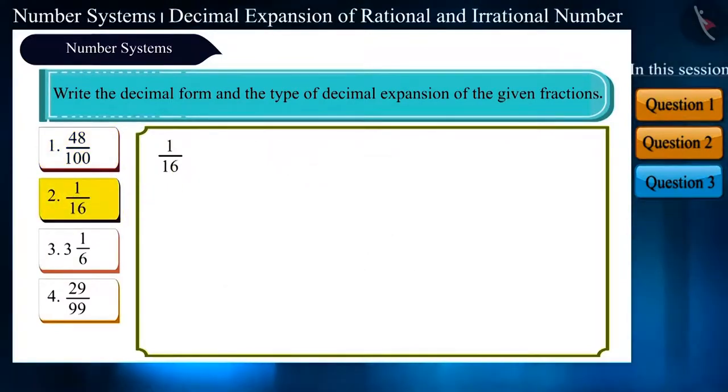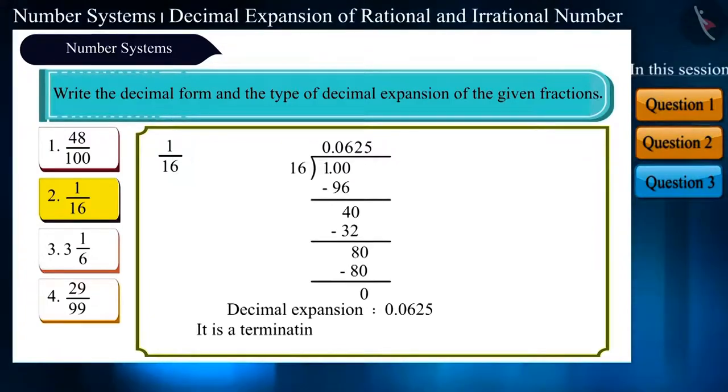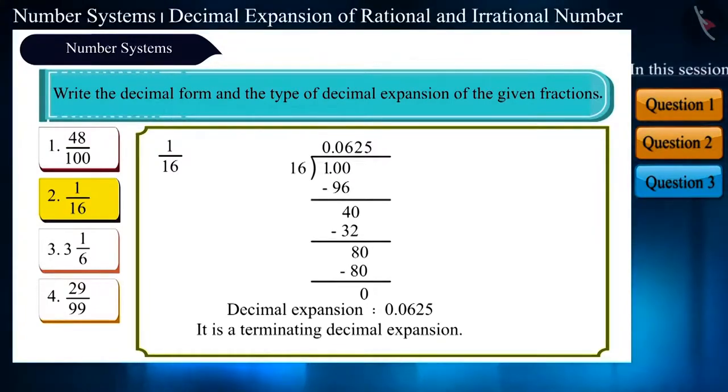1 by 16. On solving this too, the remainder obtained is 0. Its decimal expansion is 0.0625. Therefore, this is also a terminating decimal expansion.